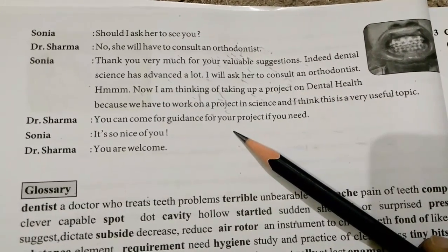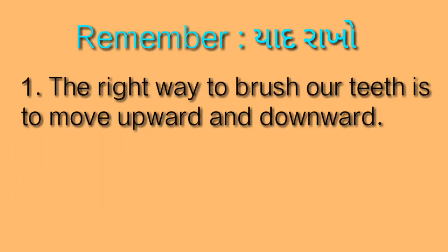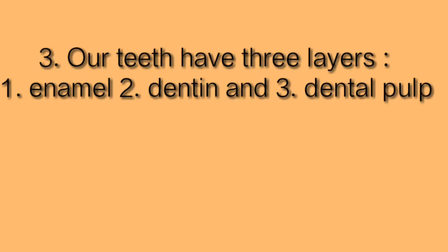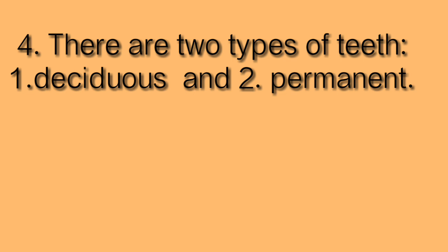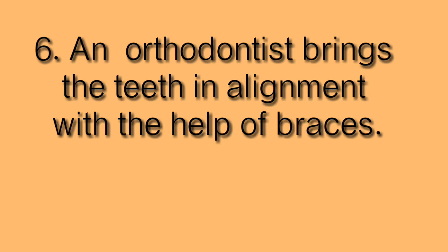Sonia says: it's so nice of you. Dr. Sharma says: you are welcome. Remember — first, the right way to brush our teeth is to move upward and downward. Second, cleaning of mouth is the first requirement of dental hygiene. Third, our teeth have three layers: enamel, dentin, and dental pulp. Fourth, there are two types of teeth: deciduous and permanent. Fifth, usually we have 32 teeth. Sixth, an orthodontist brings the teeth into alignment with the help of braces.